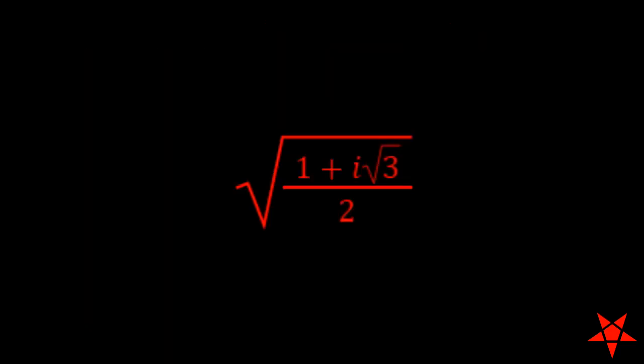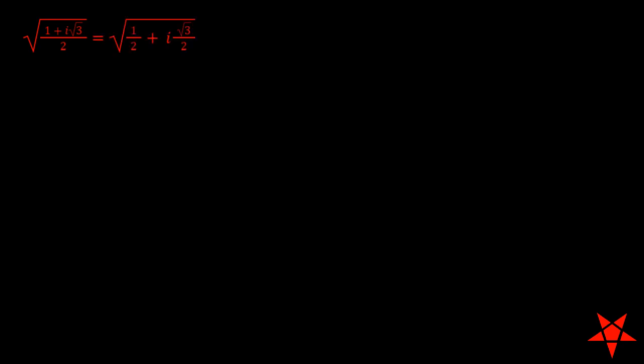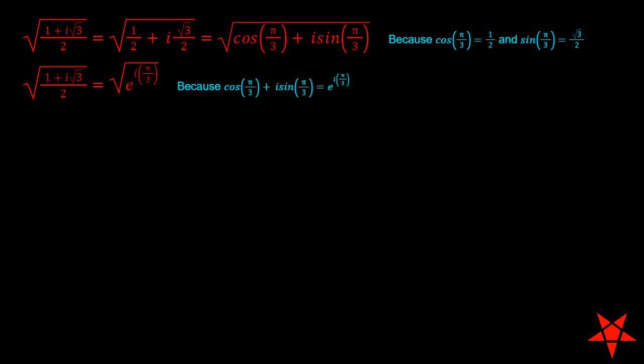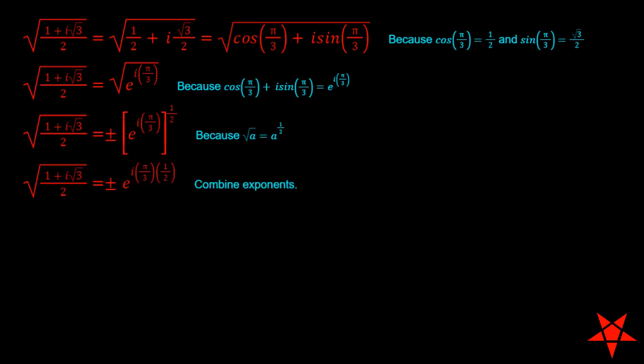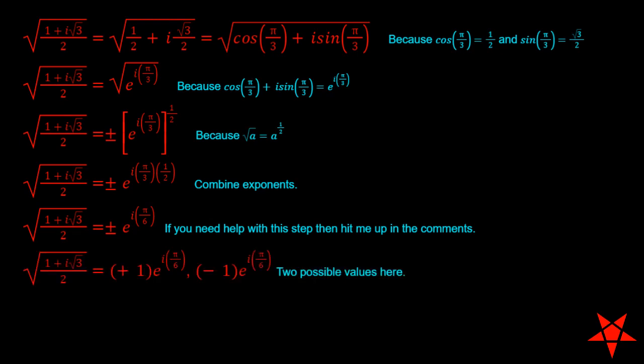So for the radical of 1 plus i root 3 quantity divided by 2, we start by separating the real and imaginary components before recognizing that they correspond to sine and cosine values for pi over 3 radians. Next, we use Euler's relation to convert the expression inside of the radical into an exponential before we drop the radical altogether in favor of encapsulating the entire expression inside of an exponent of 1 half. We also explicitly state that the result can either have a plus or a minus in front of it and still be true.